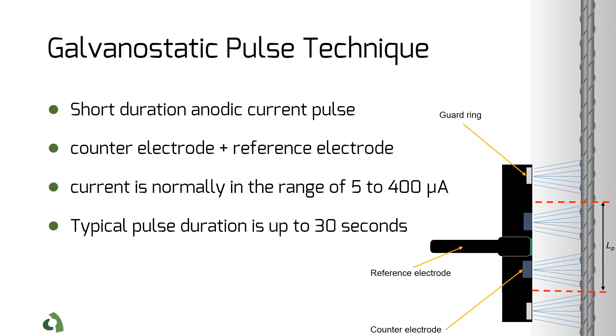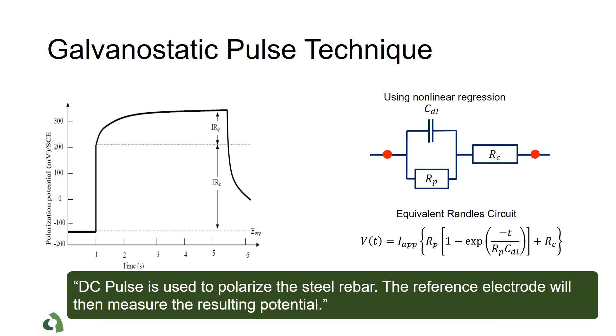The magnitude of the applied current is normally in the range of 2 to 400 microamperes, and the duration of pulse is less than 30 seconds. This small anodic current changes the potential of rebar in concrete. In fact, the rebar is polarized in the anodic direction starting from the open circuit potential.